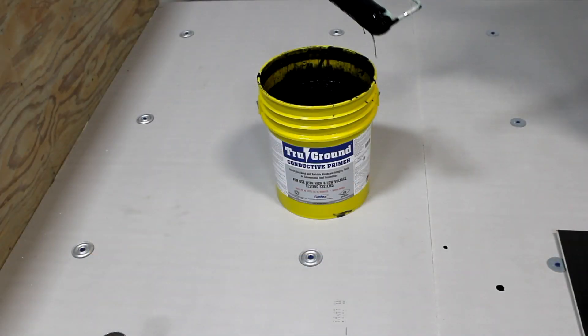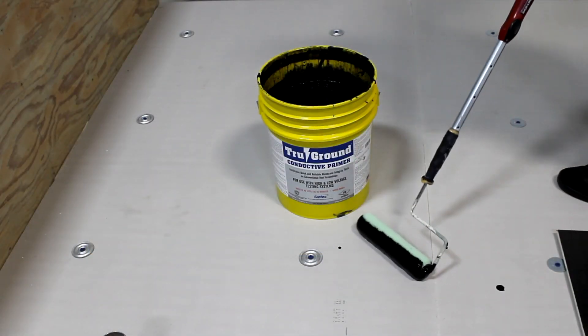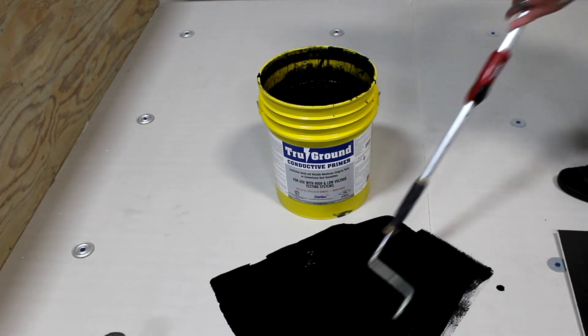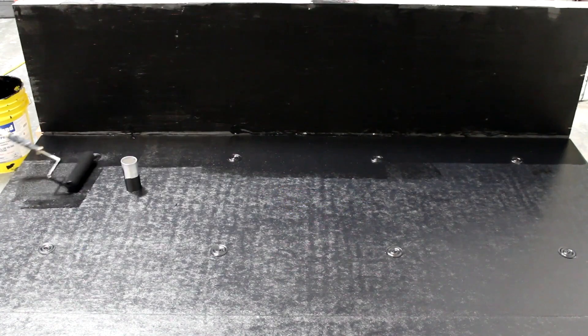True Ground is a conductive, water-based primer containing carbon black that was specifically created to enable low-voltage and high-voltage ELD testing of conventional roofing assemblies.